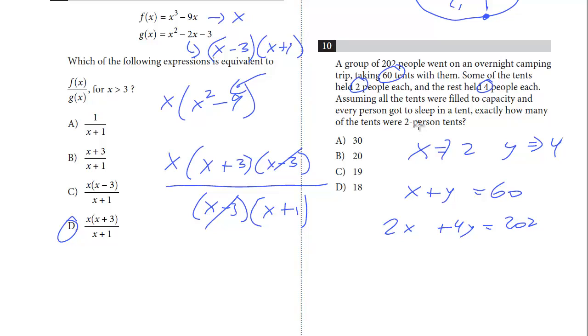And at this point, you could just use substitution. We want to get the 2 people tent, which is x. So we could get y in terms of x. And so we could say for this first equation, we can subtract x. We know that y equals 60 minus x. And then we take this, and for y, we plug it in here, and now we're only dealing with x. So we've got 2x plus, and we've got 4 times the quantity, 60 minus x, equals 202. And then we get 2x plus 240 minus 4x equals 202.